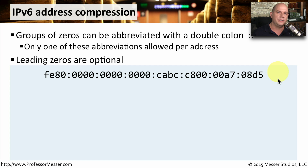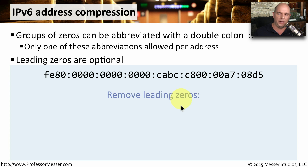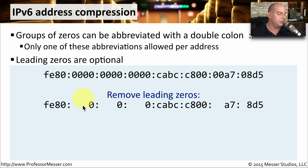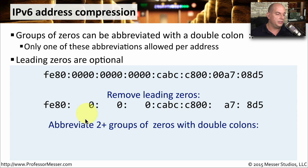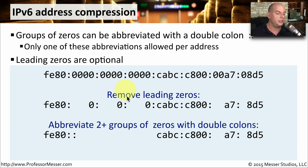Fortunately, there are a number of ways to abbreviate or compress the address to a much smaller size. One of the first things you can do is remove all of the leading zeros. So if we take this address and remove those leading zeros, it becomes much smaller. We got rid of three leading zeros in some sections, a couple next to the A7, and a leading zero on the last two bytes. We can also compress further by abbreviating sections with multiple groups of zeros using a double colon.